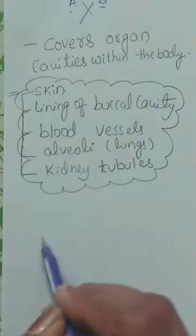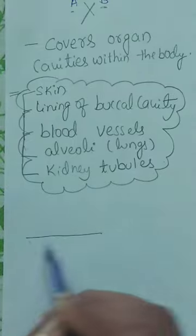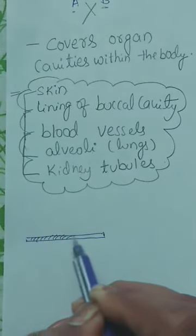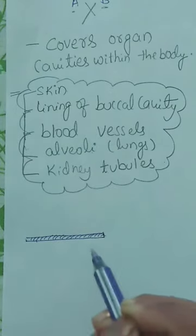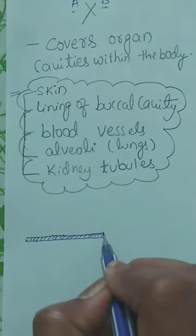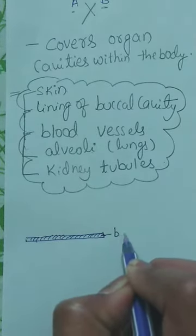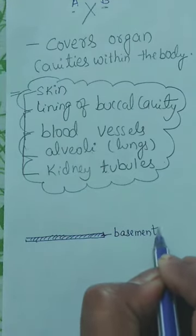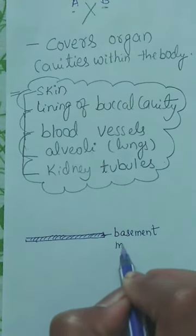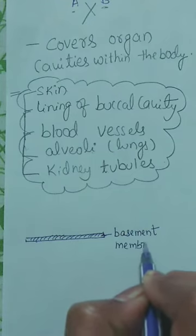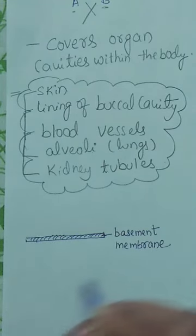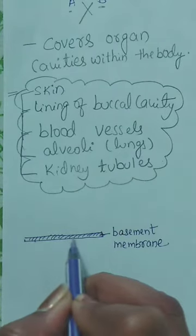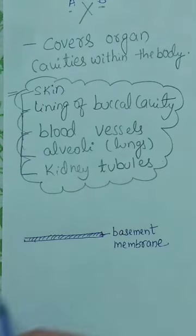This delicate non-cellular membrane is called the basement membrane. It is non-cellular meaning it does not have any cells — it is a continuous sheet-like structure called the basement membrane.